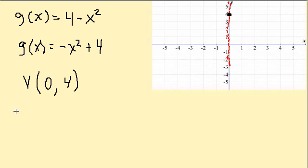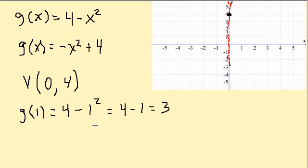So g(1) is equal to—we can plug it into either one, it doesn't matter—4 - 1², which is 4 - 1, which equals 3. So that gives us the point (1, 3). So I plot the point (1, 3).